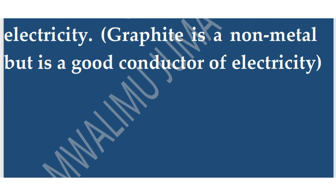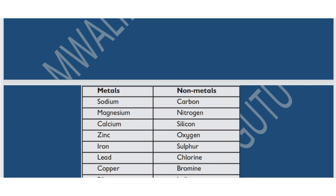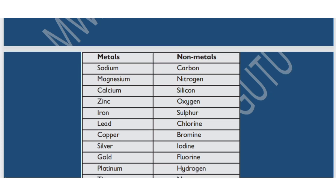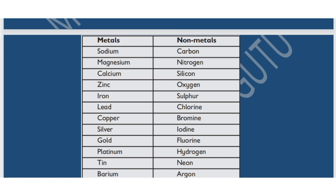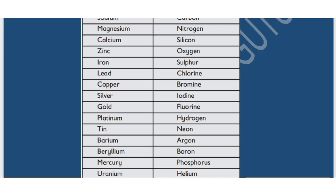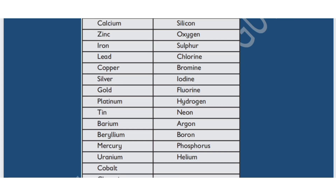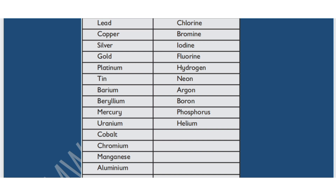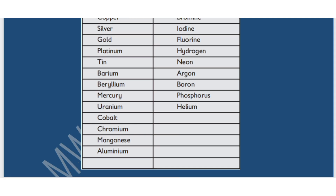Grouping them as metals or non-metals: for metals we have sodium, magnesium, calcium, zinc, iron, lead, copper, silver, gold, platinum, tin, barium, beryllium, mercury, uranium, cobalt, chromium, manganese, and aluminium. Those are some examples of metals.